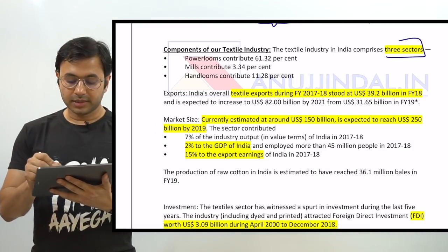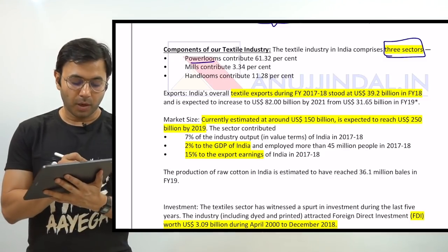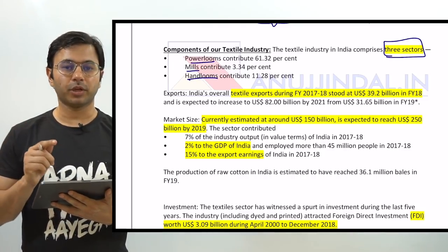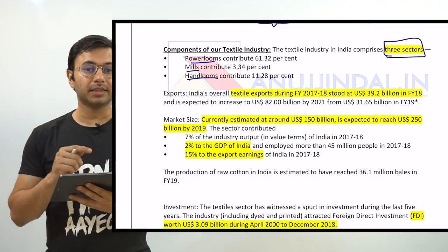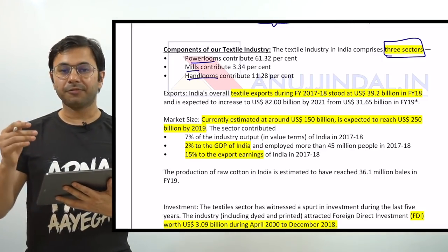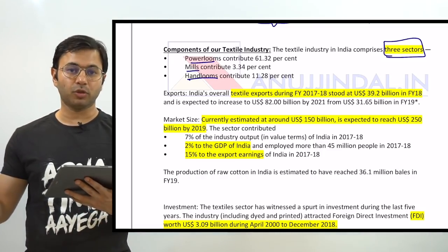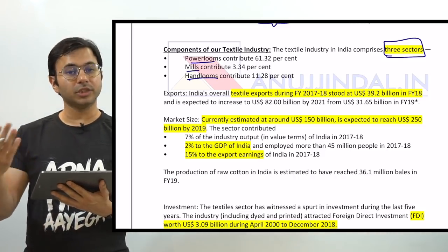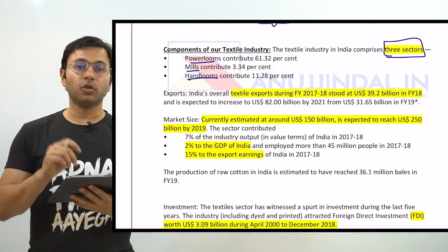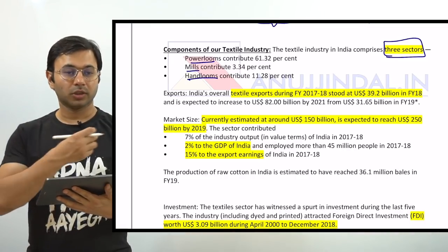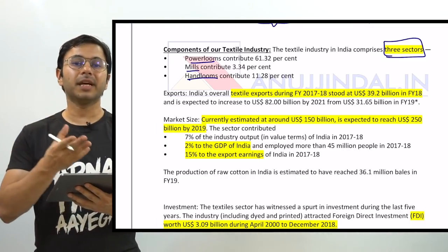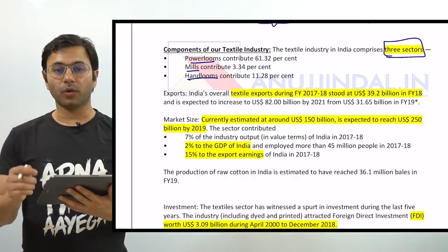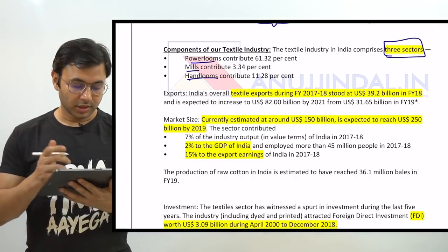The textile industry comprises three sectors: power loom, mills, and hand looms. Mills is the first level and a superset which may also include the power loom sector. Textile mills create threads out of cotton or other raw materials, whereas looming is the process of converting threads into cloth. So cloth is made in the power loom or hand loom industry, while mills convert raw material into threads.